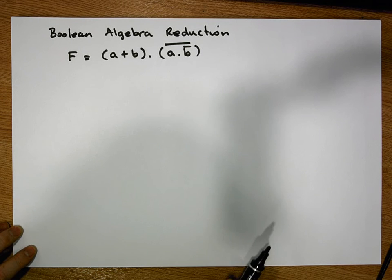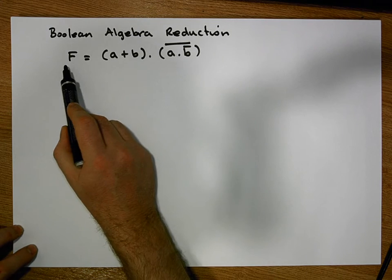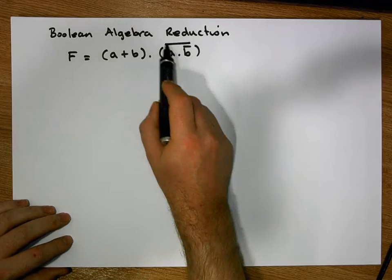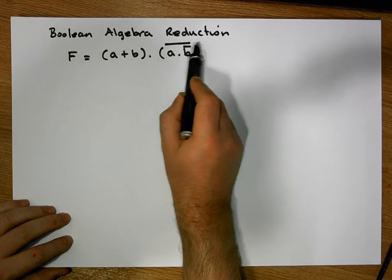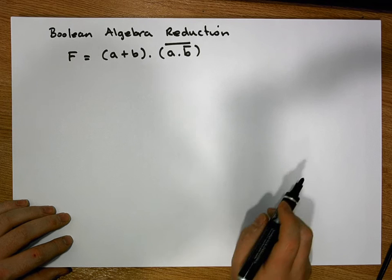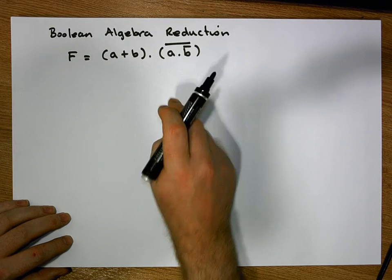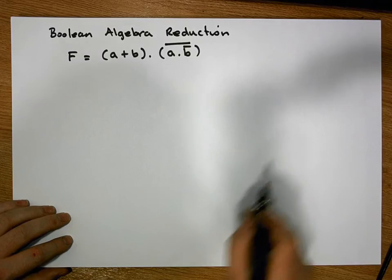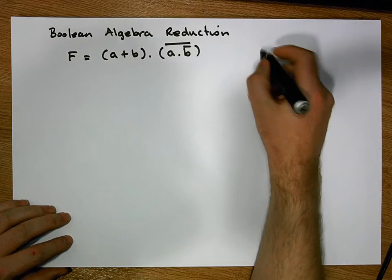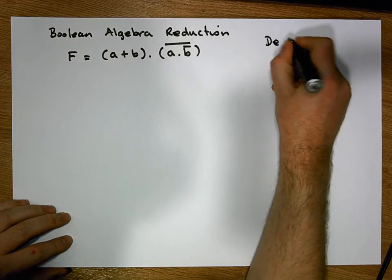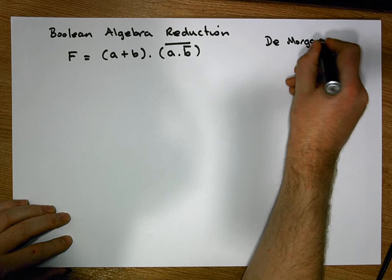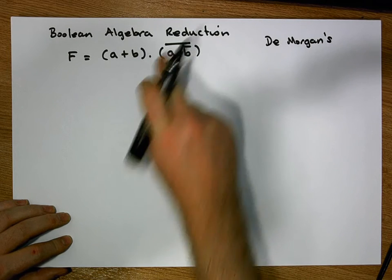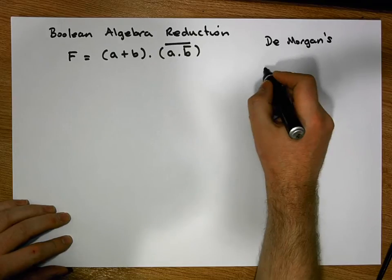The question is: what does this reduce down to? Anytime we have a function with terms tied together to a negation, the first thing we should always do is try to convert or break this negation bar. We have a rule known as De Morgan's Law, which helps us to break these particular bars.